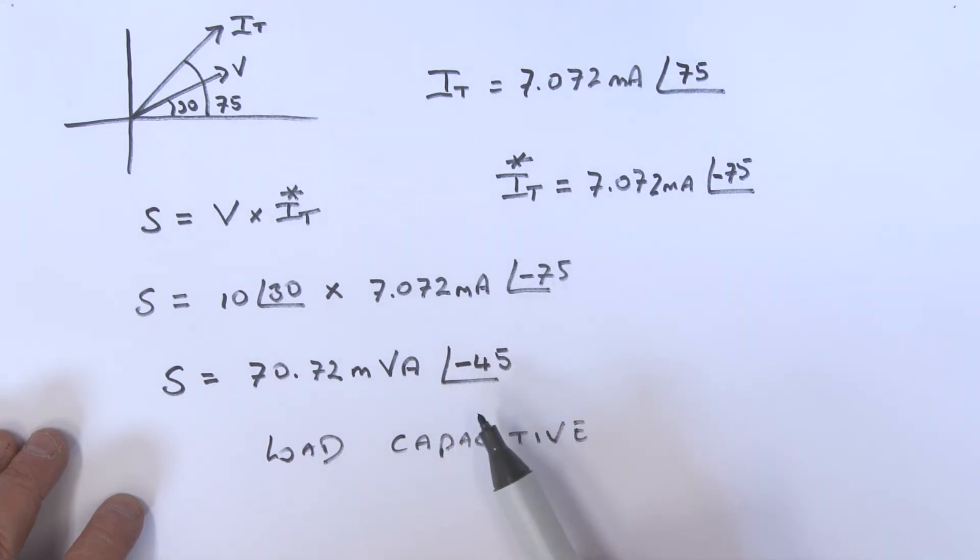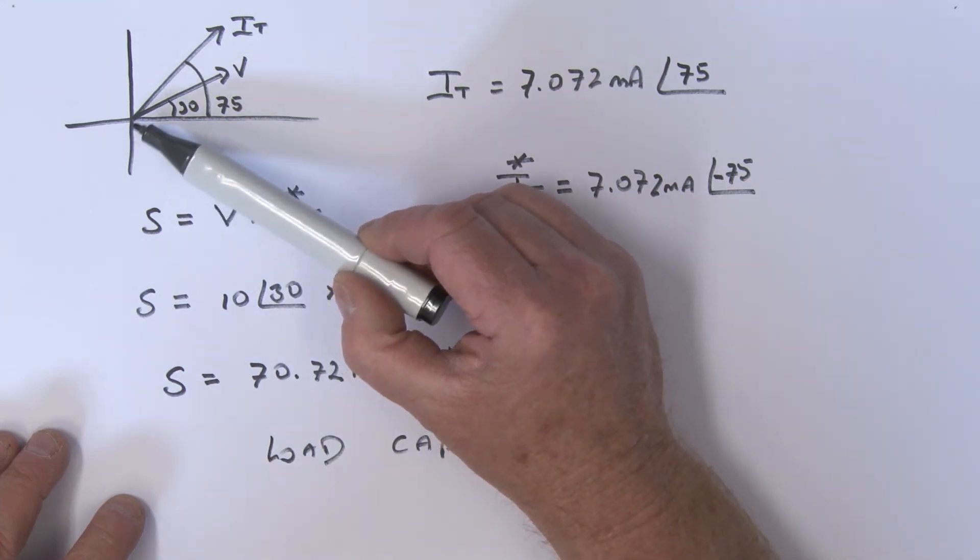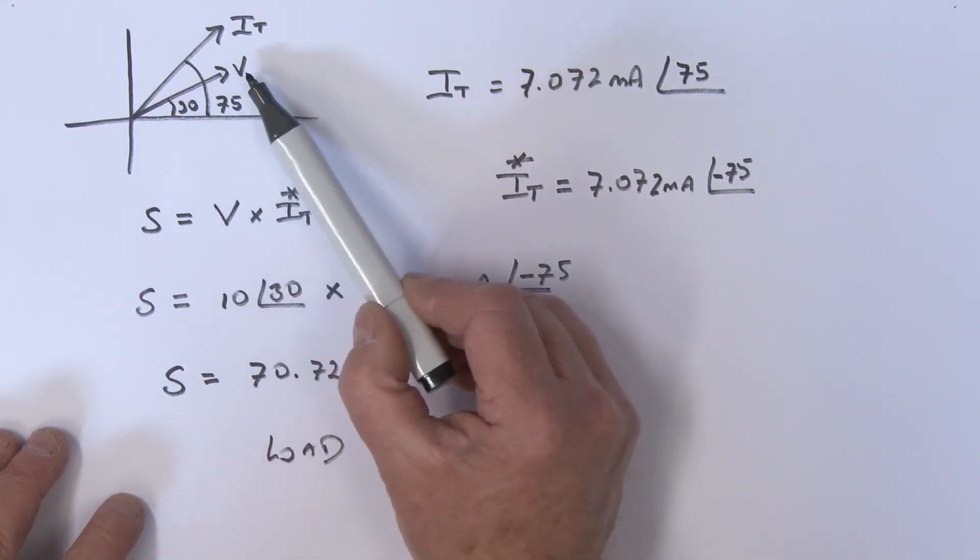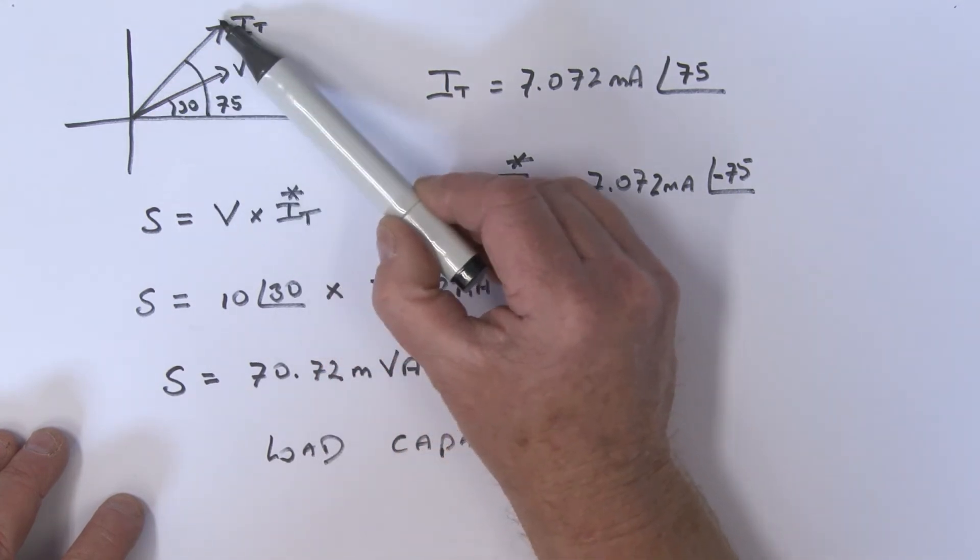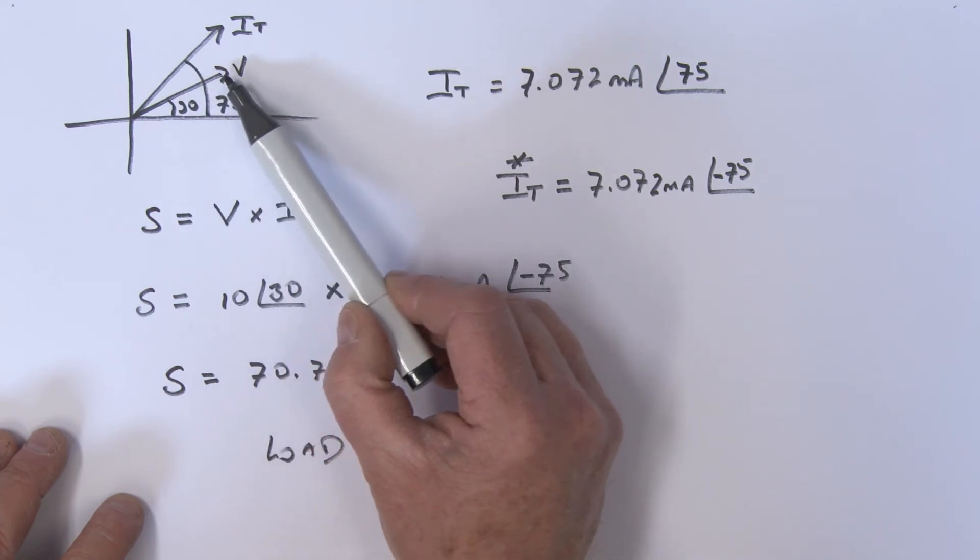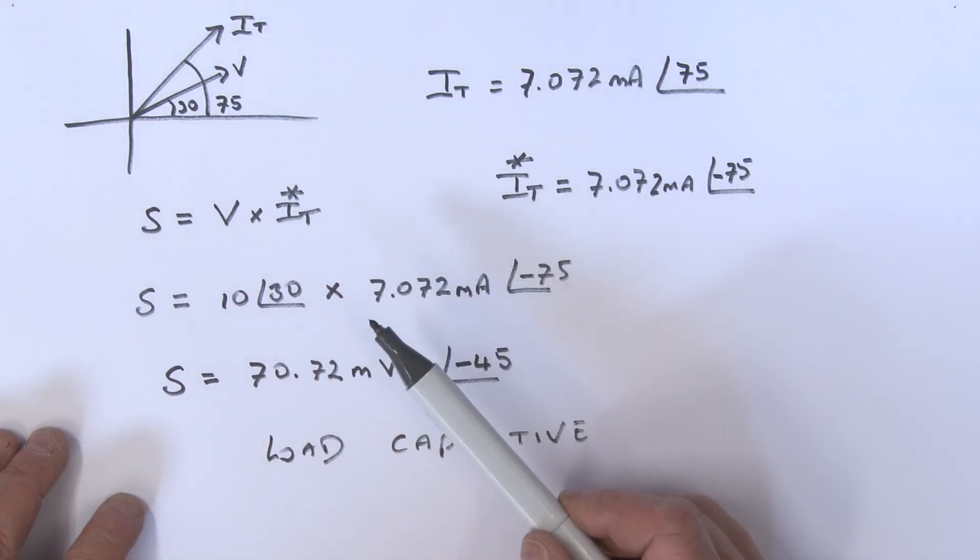A little later on we're going to formalize this, but this is actually referred to as a leading power factor, and we note that it's a leading power factor because that current IT is really leading the voltage V.